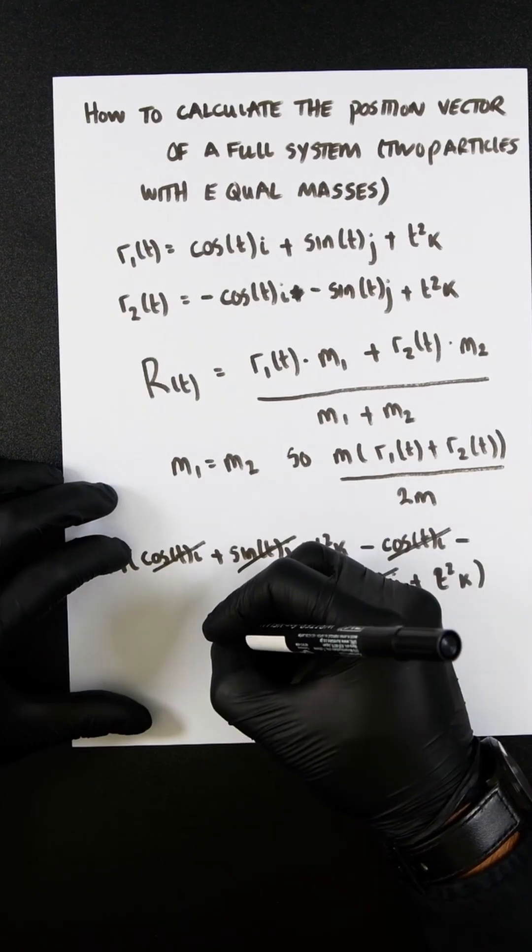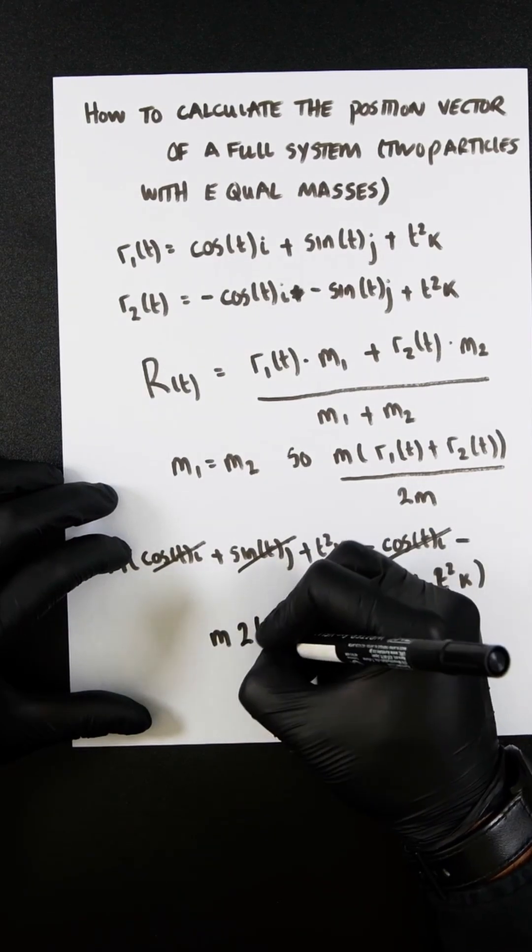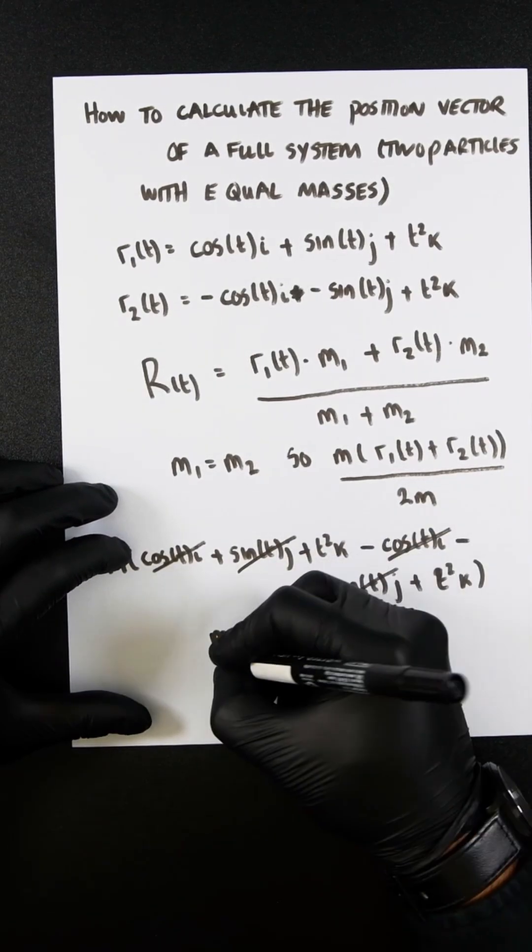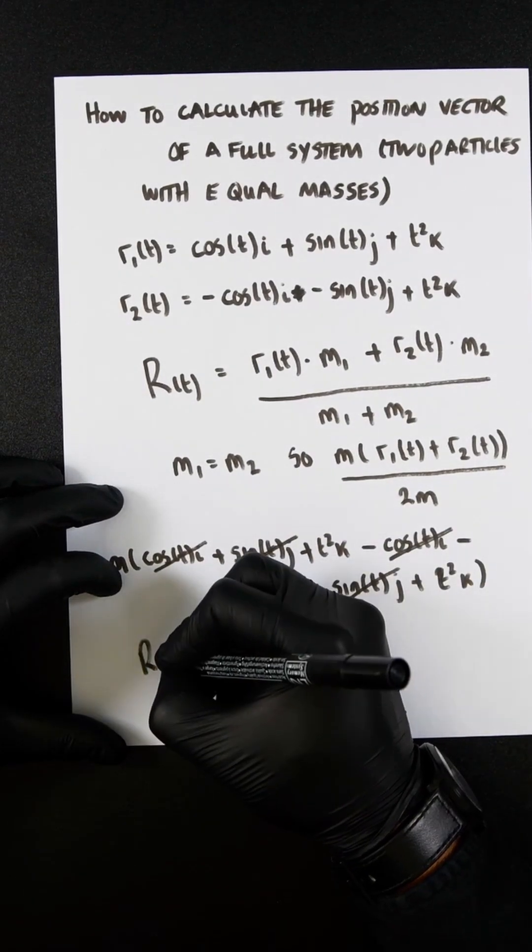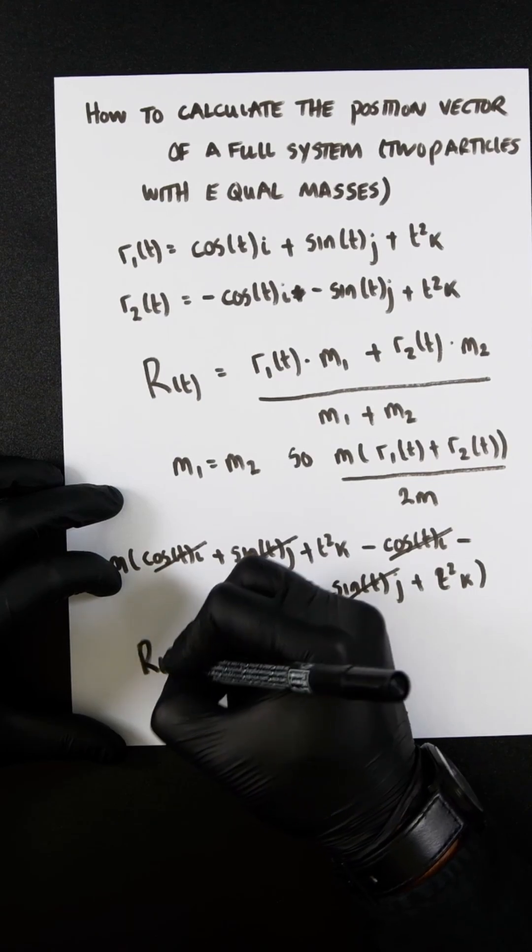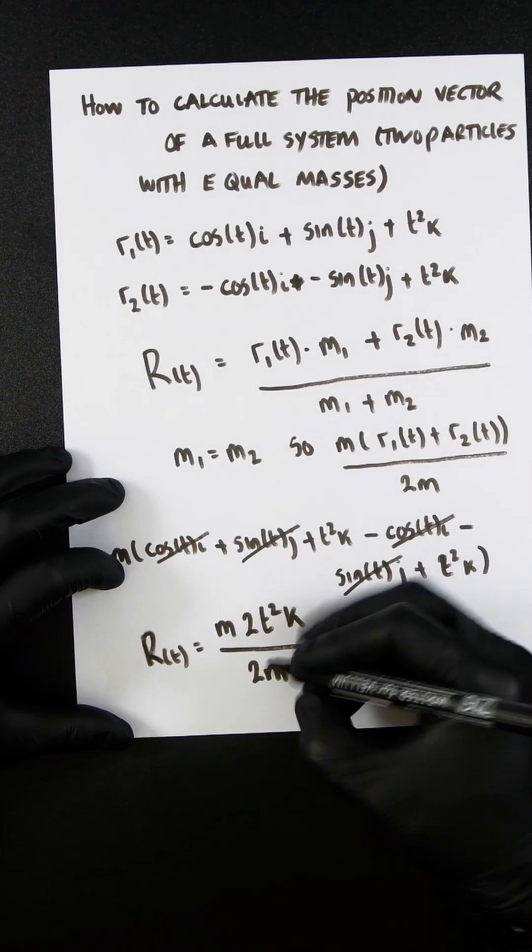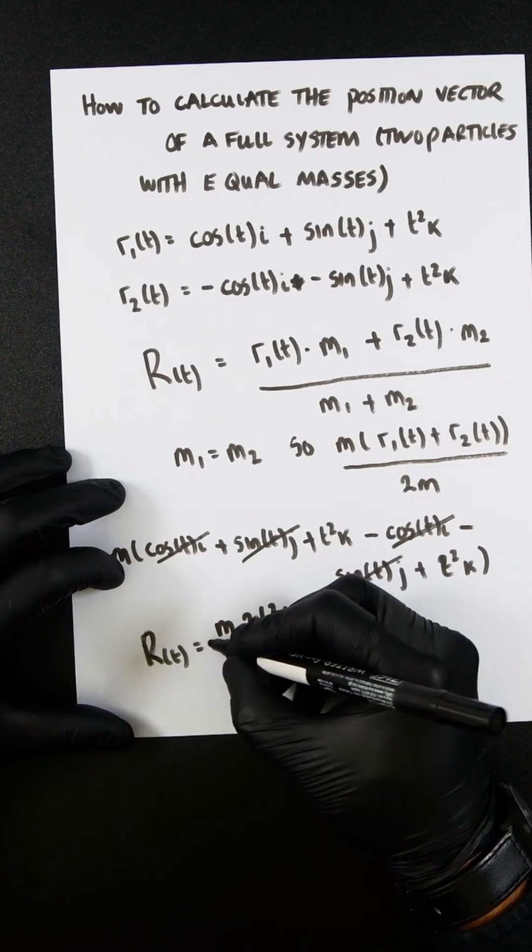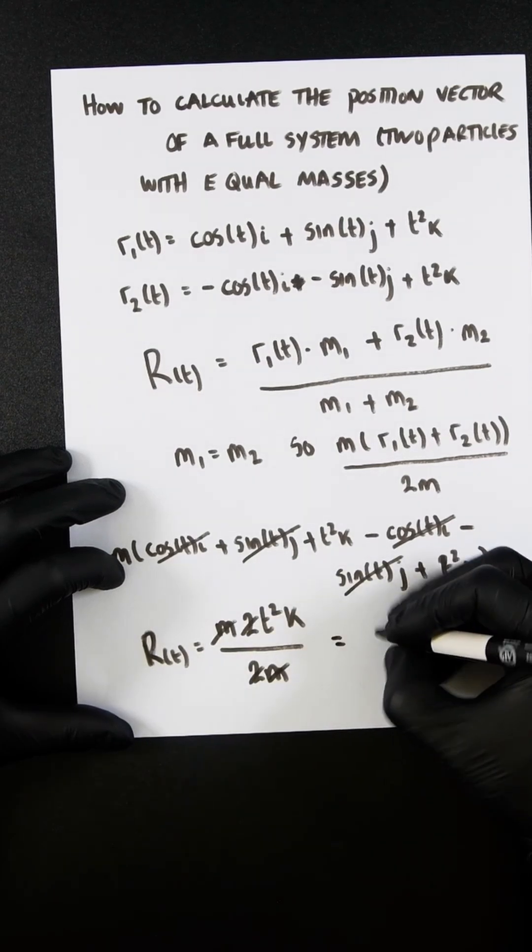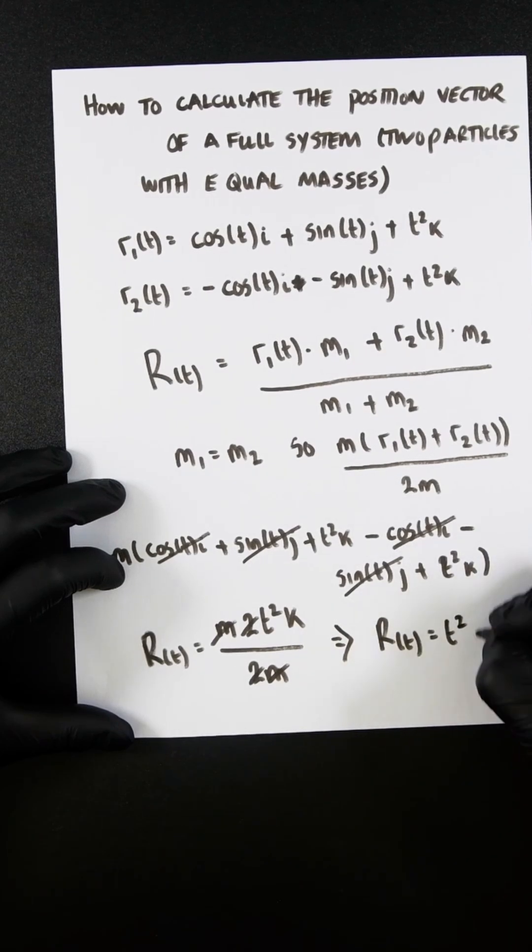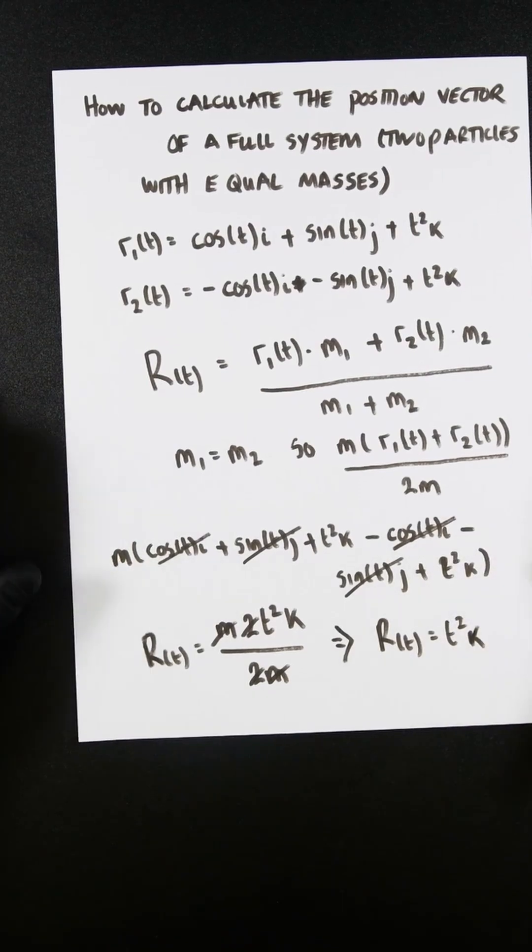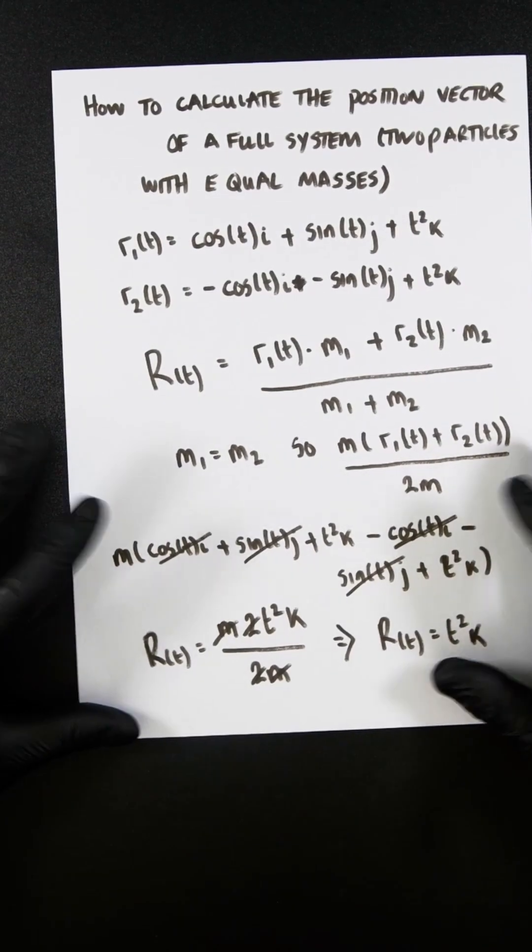That's now going to be m times 2t squared k divided by 2m in the denominator. The 2s are going to cancel, the ms are going to cancel, and therefore we're going to get our answer: R(t) equals t squared k.